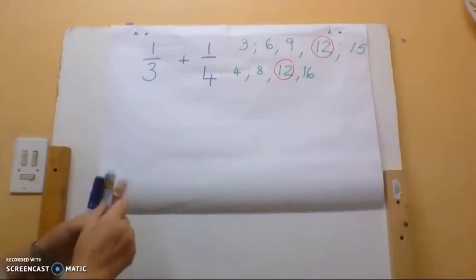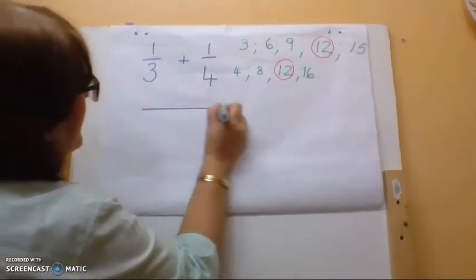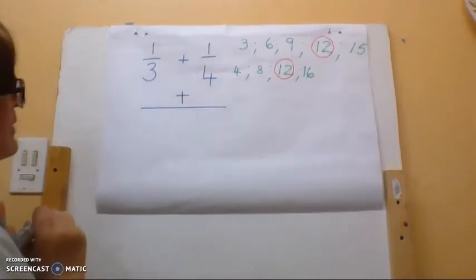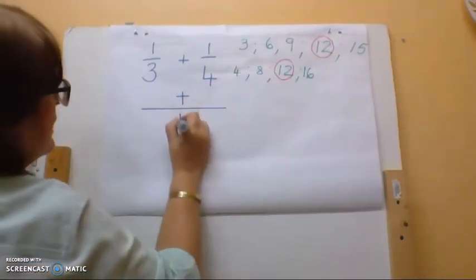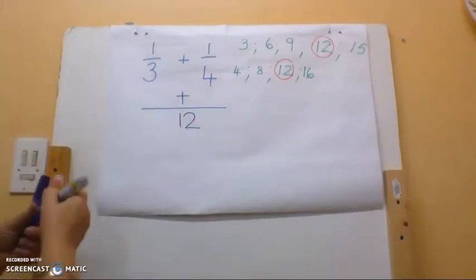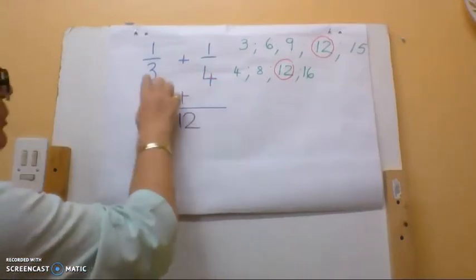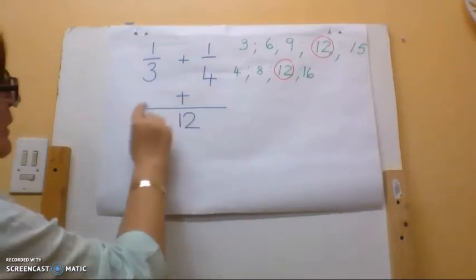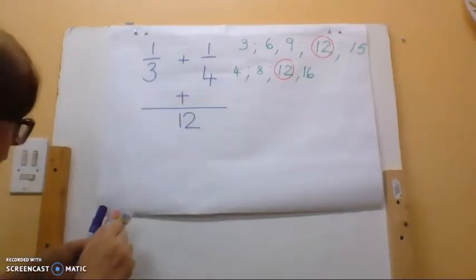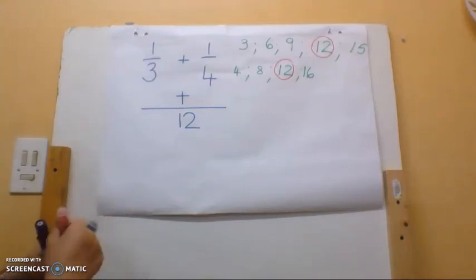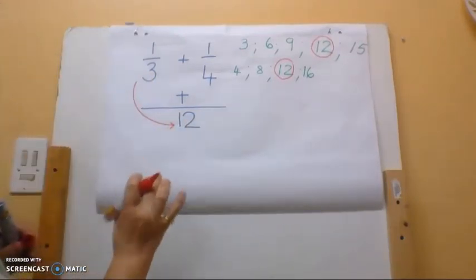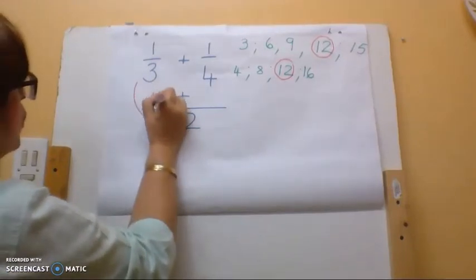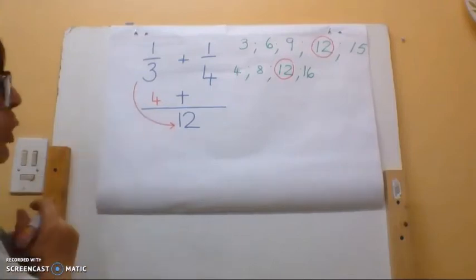So 12 is my lowest common multiple, which is going to become my lowest common denominator. I'm going to make my dividing line separating my numerators and my denominators longer, and there's my denominator — it's 12. Now this is a very important thing: I'm going to change both of these fractions into an equivalent fraction with the denominator of 12. Three will go into 12 four times; four times one is four, so one third is also four twelfths.